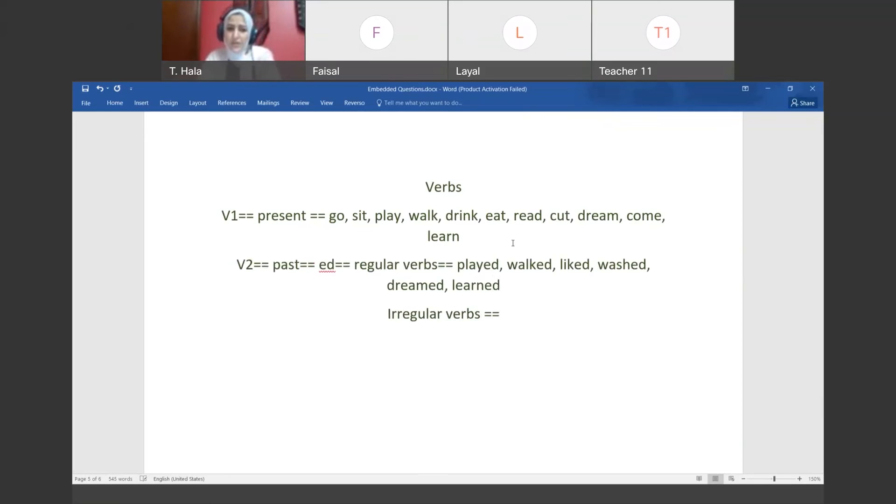So the verb in the first form is in the present, the basic form, the basic image. When I want to say go - he goes - went, it becomes the second form in the past. The basis for me in the past, when I want to convert the verb into past, I add E-D at the end of the verb. We add E-D to the verb. And the verbs that we add E-D to, we call them regular verbs. Like what? Like when I come to say play - he plays - played, walked, washed. All of these are verbs that take E-D.